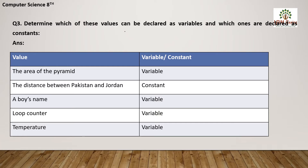A loop counter is a variable because a loop can start from 0, minus 3, minus 5, 6, and so on. Temperature can also be a variable.